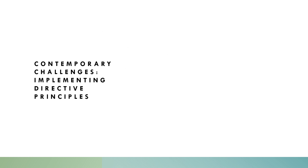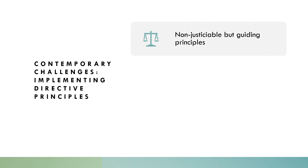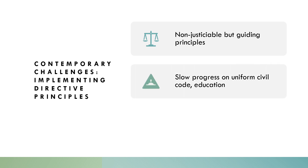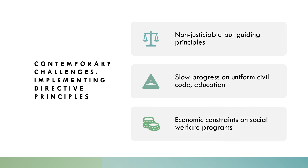Another challenge lies in effectively implementing the directive principles of state policy. These non-justiciable principles, while not directly enforceable, serve as guiding lights for the government to achieve a welfare state. The directive principles advocate for securing a uniform civil code and providing free and compulsory education. However, progress on these fronts has been slow due to various social, political, and religious considerations. Additionally, economic constraints can hinder the implementation of social welfare programs envisioned by the directive principles of state policy.